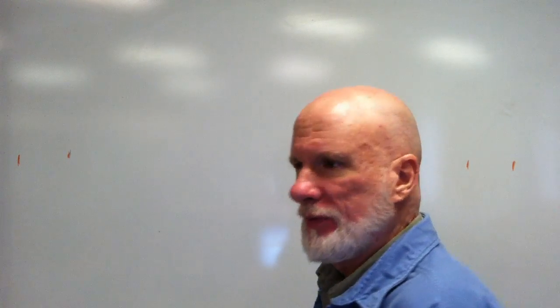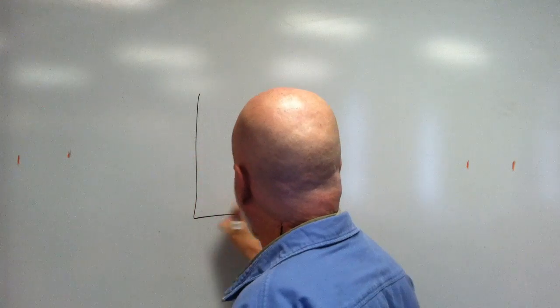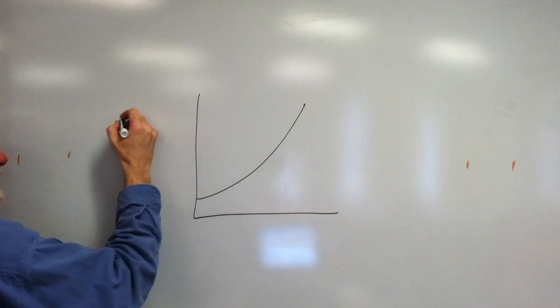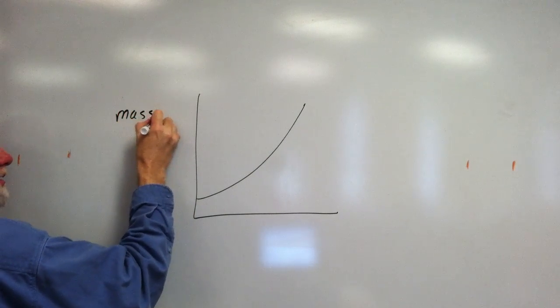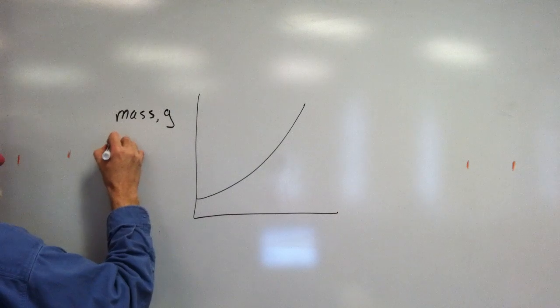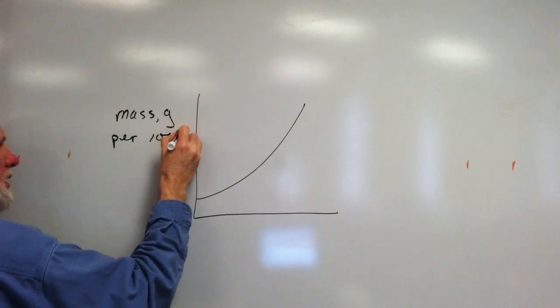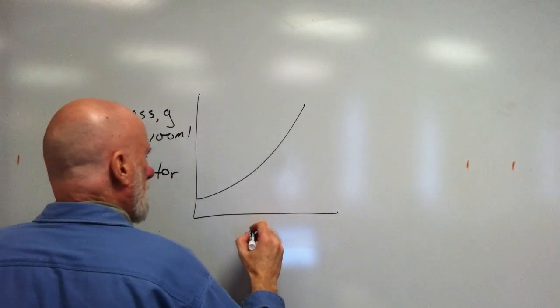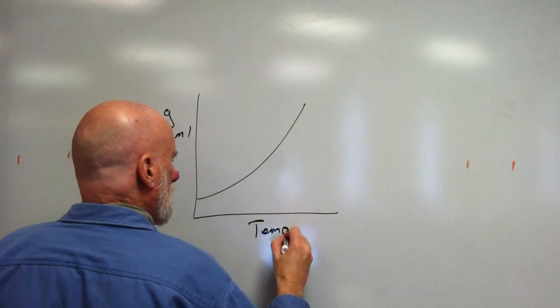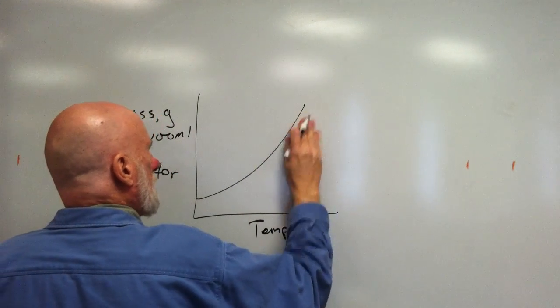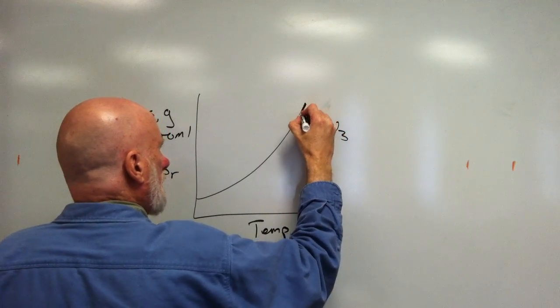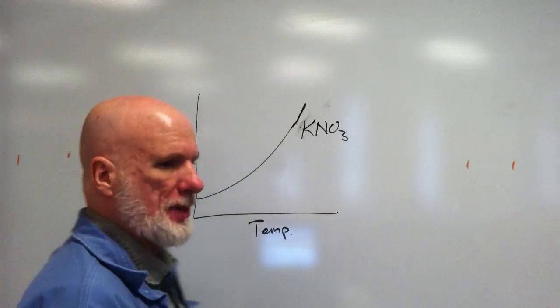Now let me put on the board a graph. This is going to be the y-axis, this is going to be the mass in grams per 100 milliliters of water, this is going to be temperature, this is going to be potassium nitrate. That's going to be potassium nitrate.